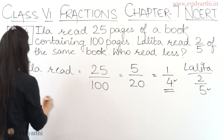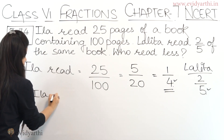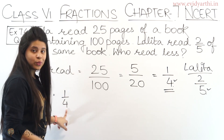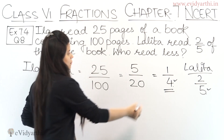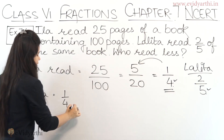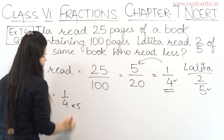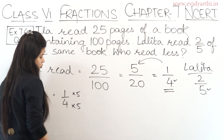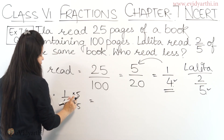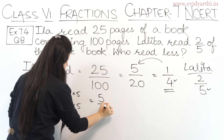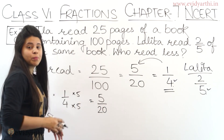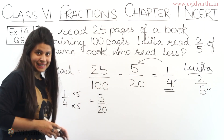Starting with Ella: her fraction is 1 upon 4. To make the denominator 20, we multiply by 5. So numerator is also multiplied by 5: 5 into 1 is 5, and 5 into 4 is 20. So Ella's equivalent fraction is 5 upon 20.